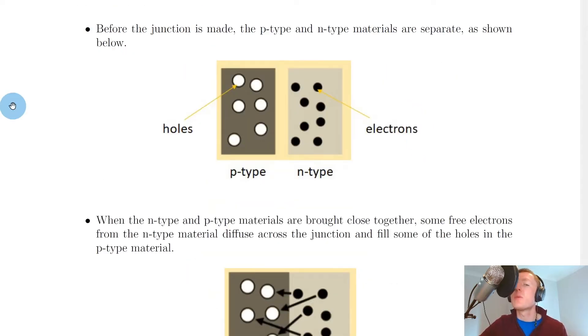We'll now look at the steps of how you would form a P-N junction. Firstly, before the junction is made, the P-type and N-type materials are separate as shown below. We've got our P-type material on the left with holes being the majority charge carriers, and our N-type material on the right with electrons being the majority charge carriers.